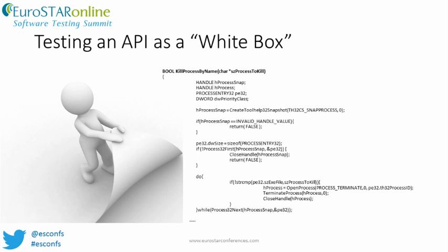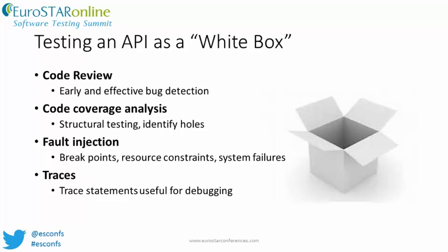API testing from a white or glass box perspective can also provide additional value — it is like pulling back the covers and exposing the implementation details of the API. One type of white box testing is code reviews. Code reviews have been found to be effective in identifying specific types of bugs, especially security bugs. Even informal code reviews or buddy checks prior to check-in have demonstrated value in many development teams. Involving testers in code reviews provides yet another perspective and may add even more value in identifying bugs sooner.